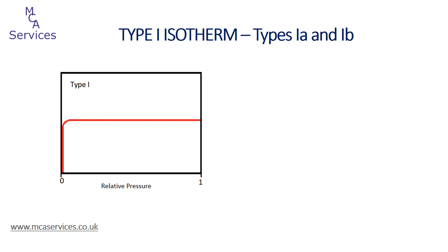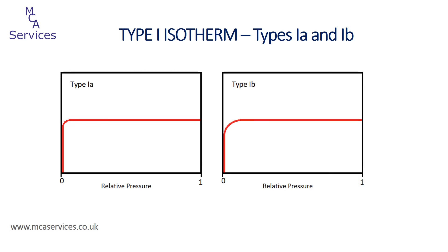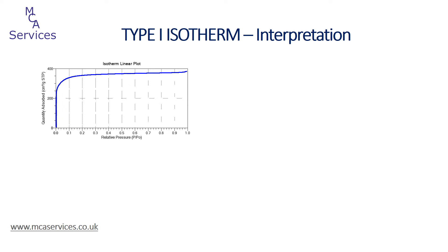The classic type 1 isotherm becomes the type 1a isotherm, whereas the type 1b isotherm has been introduced with a broader isotherm knee due to the presence of larger micropores and the extension of these into the distribution of mesopores. This is an isotherm from nitrogen adsorption on an activated carbon sample measured here at MCA Services. With type 1 isotherms we work just from the adsorption data. In order to reliably collect data at extremely low relative pressures, we don't just need to measure the corresponding absolute pressure accurately but need to generate these pressures with very high stability over quite long time periods.